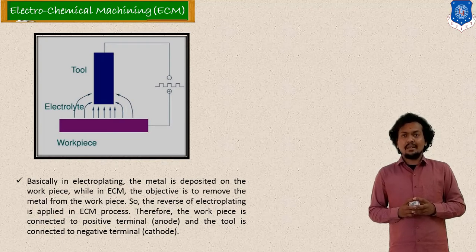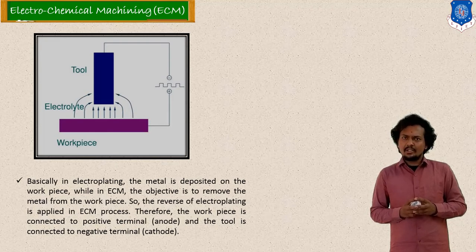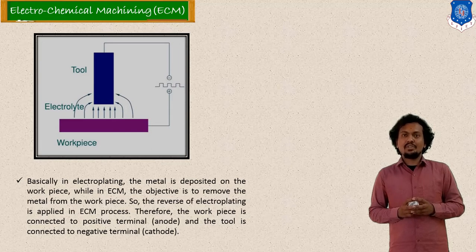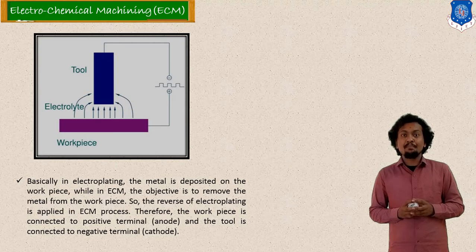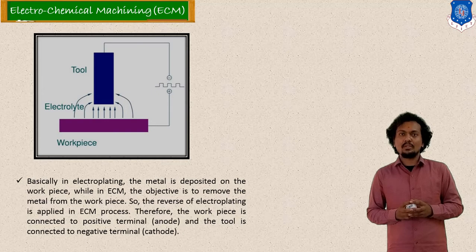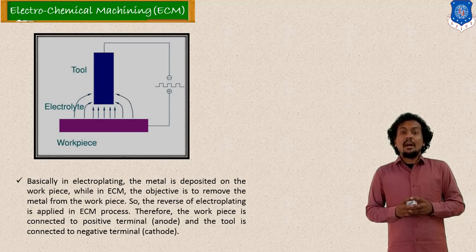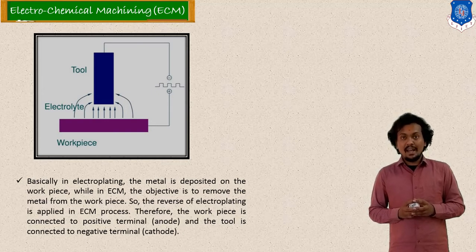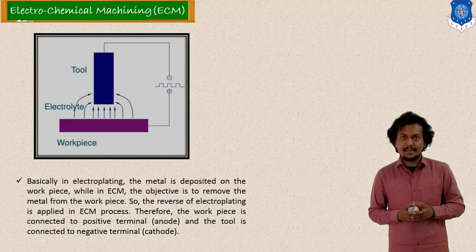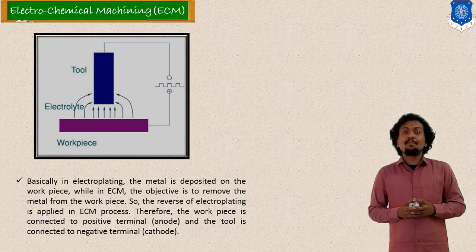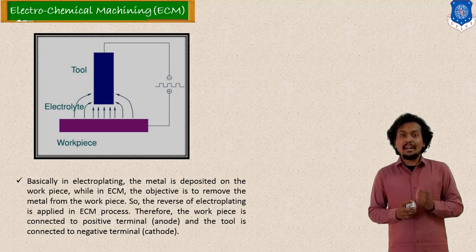Generally NaCl, Sulphuric Acid (H2SO4), Hydrochloric Acid (HCl), and similar acidic or basic solutions can be used as electrolyte. Now let me introduce the electroplating concept. In electroplating, material is transferred to the workpiece — there is a plating of material on the workpiece. One best example is gold plating.